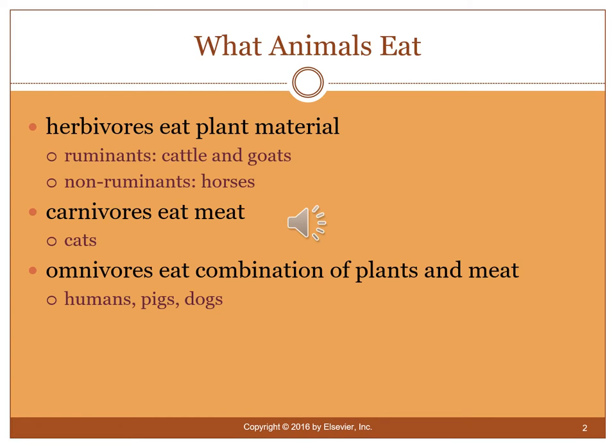This module is quite large with a lot of material to cover. A study guide will be provided closer to the test. We'll go over pronunciation and the basic structures of different types of digestive systems when talking about small animals. To start, herbivores eat only plant material and include ruminants such as cattle and goats, while non-ruminants include horses.